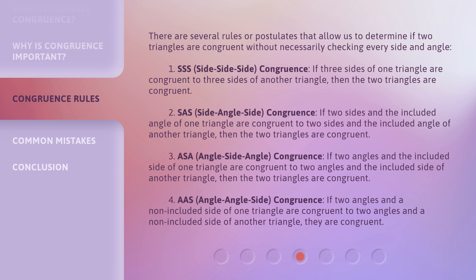The second is SAS: if two sides and the included angle of one triangle are congruent to two sides and the included angle of another triangle, then the two triangles are congruent.